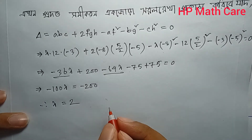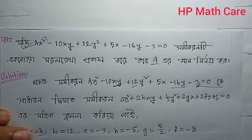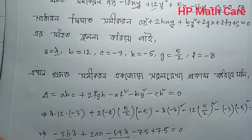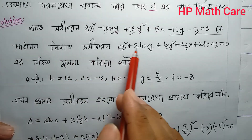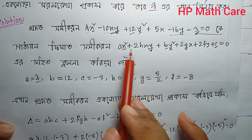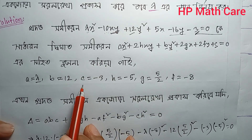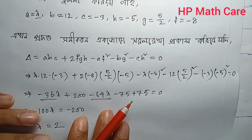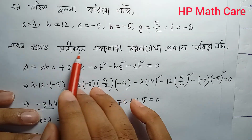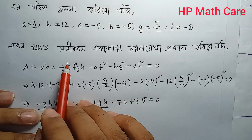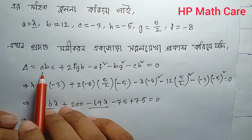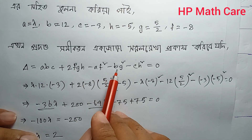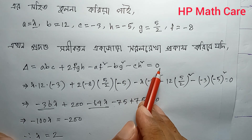So the result: lambda equals the value we computed. The condition abc + 2fgh − af² − bg² − ch² = 0 confirms this. We can now identify a, b, c in the equation as Jason — the journey through the book confirms the theorem result.